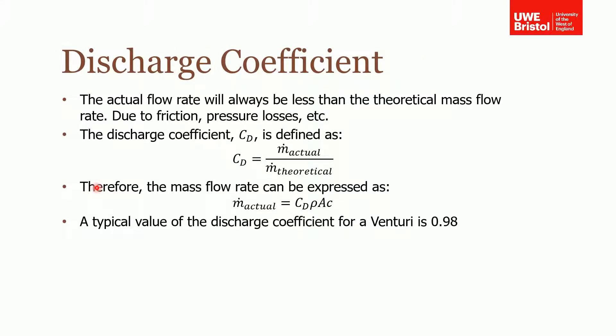Okay, so that shows us how to work out the ideal mass flow rate through a venturi meter. However, we kind of know inherently in reality that what we calculate theoretically is not always actually what we get. So the actual mass flow rate will always be less than theoretical due to friction, pressure losses, etc. And that difference is described by the discharge coefficient Cd, and this is defined as the ratio of the actual mass flow rate that you have to the theoretical mass flow rate.